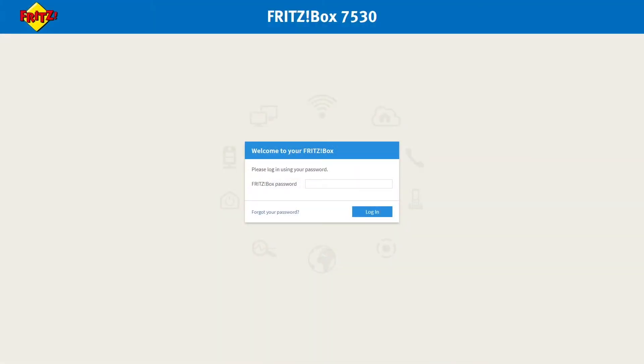And to do that the first thing you need to do is go to a computer and open up your browser of choice. And from here you'll go to 192.168.178.1. And this will take you to the Fritzbox login screen.